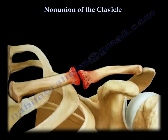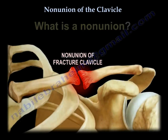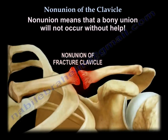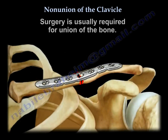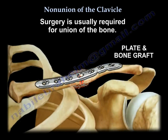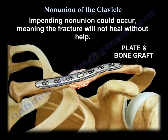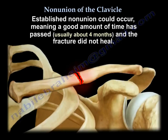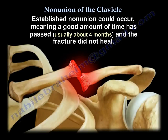This video covers nonunion of the clavicle and its treatment. What is a nonunion? Nonunion means a bony union will not occur without help, and the help is usually surgery. Nonunion can occur as an impending one — where a fracture will not heal without help — or as an established one, which means a good amount of time has passed, usually about four months, and the fracture did not heal.